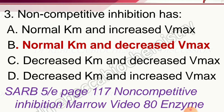Question 3: Non-competitive inhibition — options are decreased Km and decreased Vmax, decreased Km and increased Vmax, normal Km and decreased Vmax, and normal Km and increased Vmax. The correct answer is normal Km and decreased Vmax.